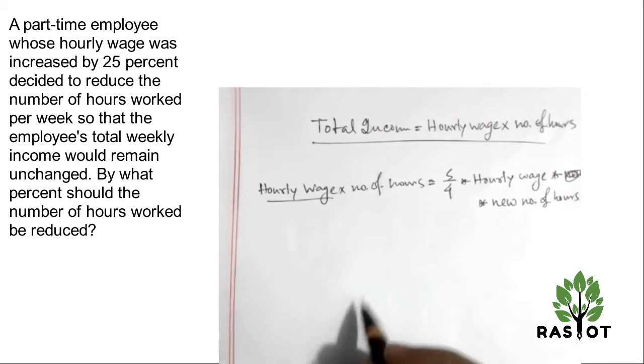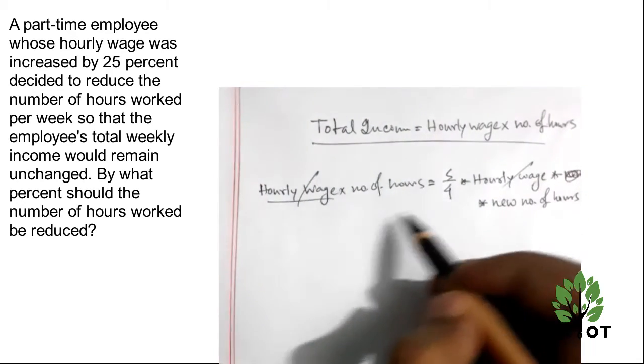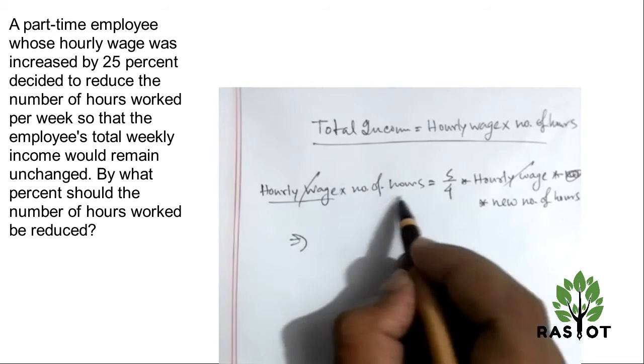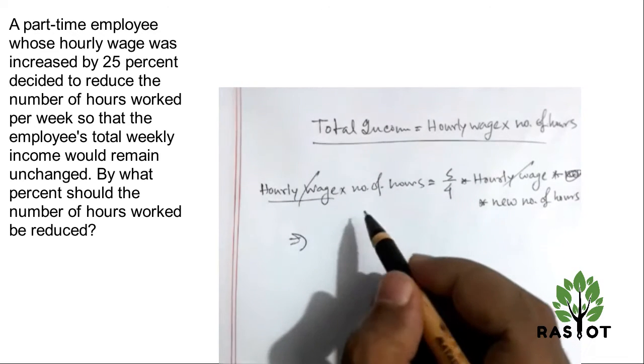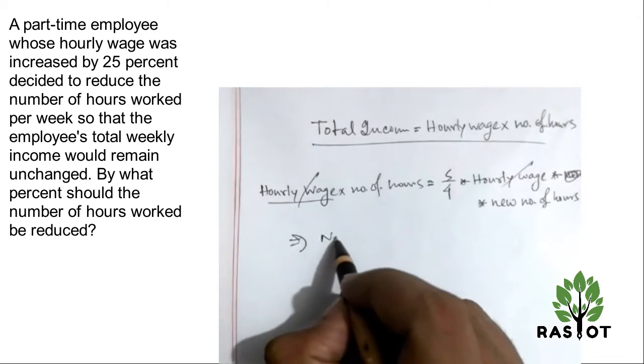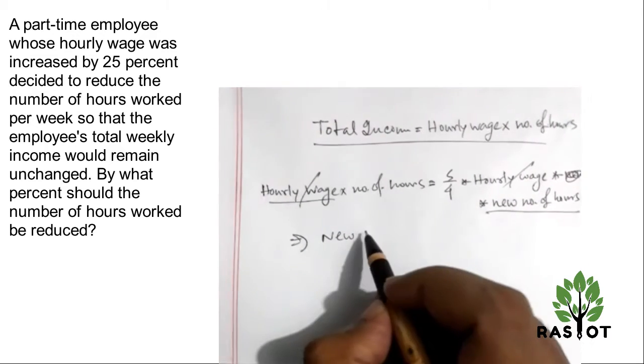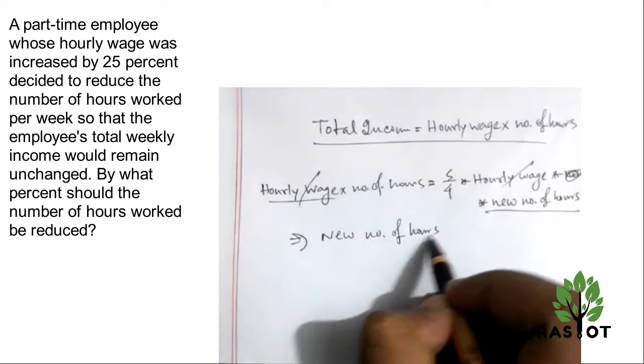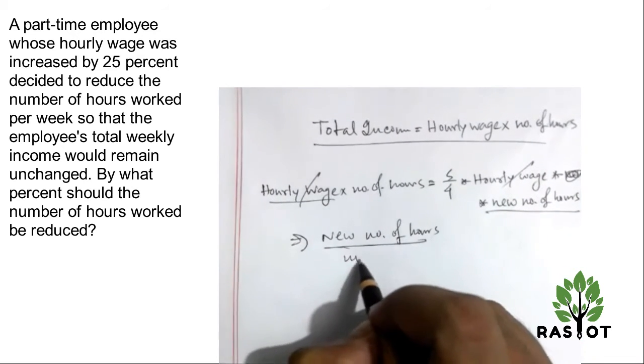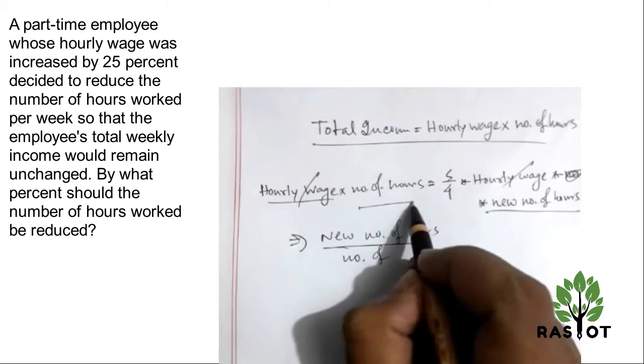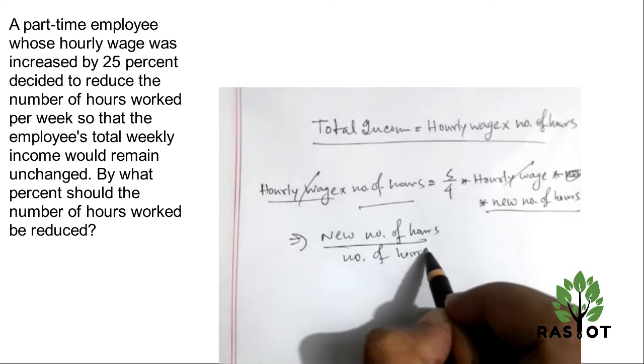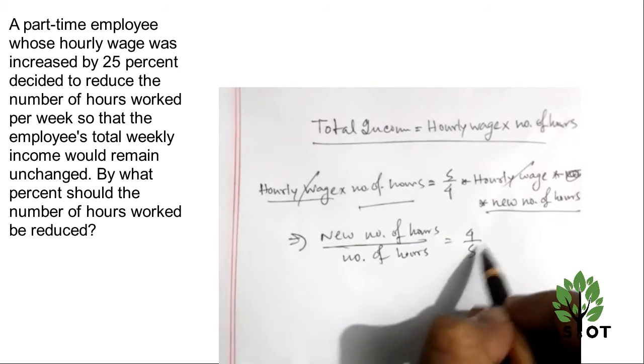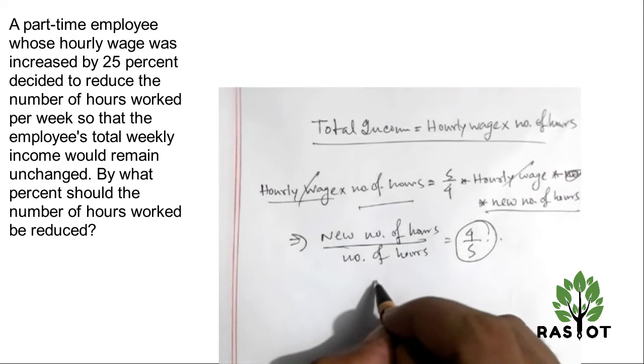Okay, the hourly wage - so after we solve, our new number of hours will be 4 fifths of the previous number of hours. Right, a decrease.